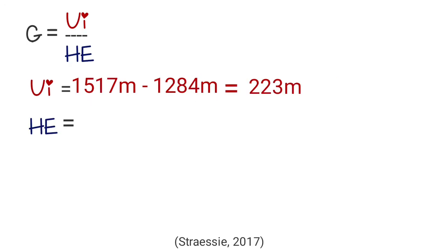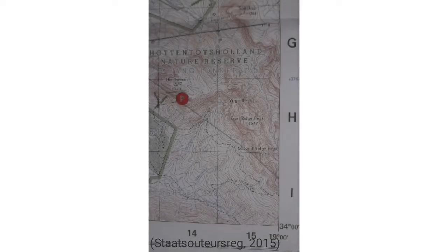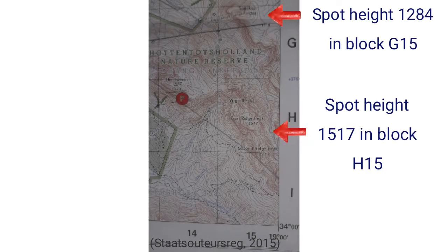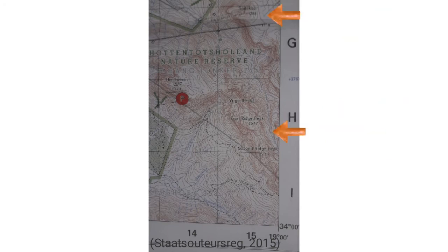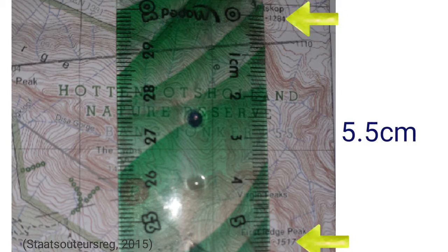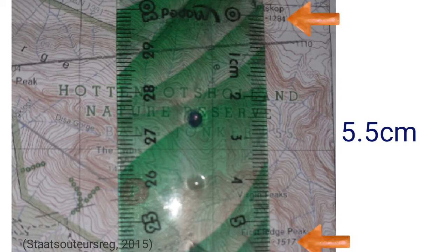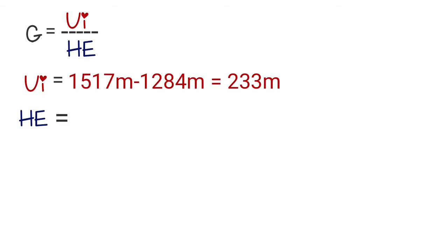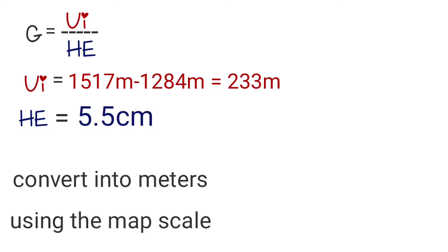To find the horizontal equivalent you need to measure the two points on the map. You place your ruler on the map between the two points and you can see it is about 5.5 centimeters.